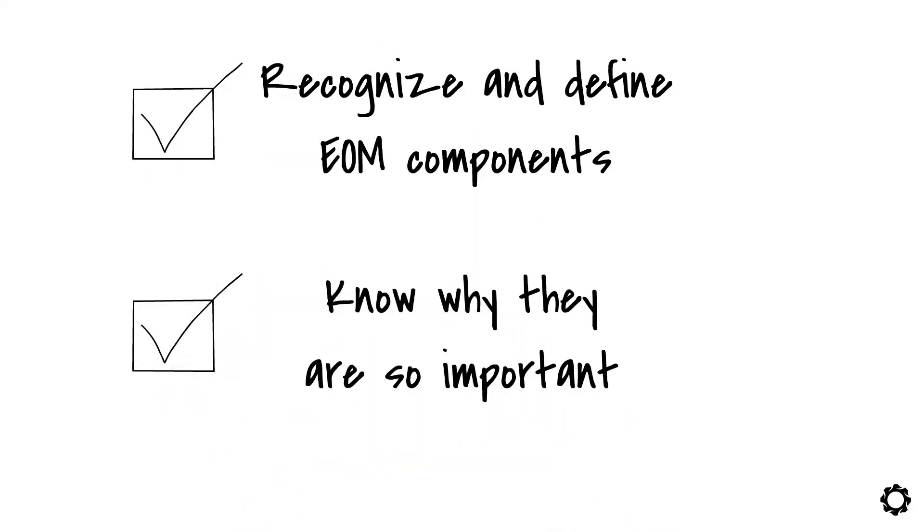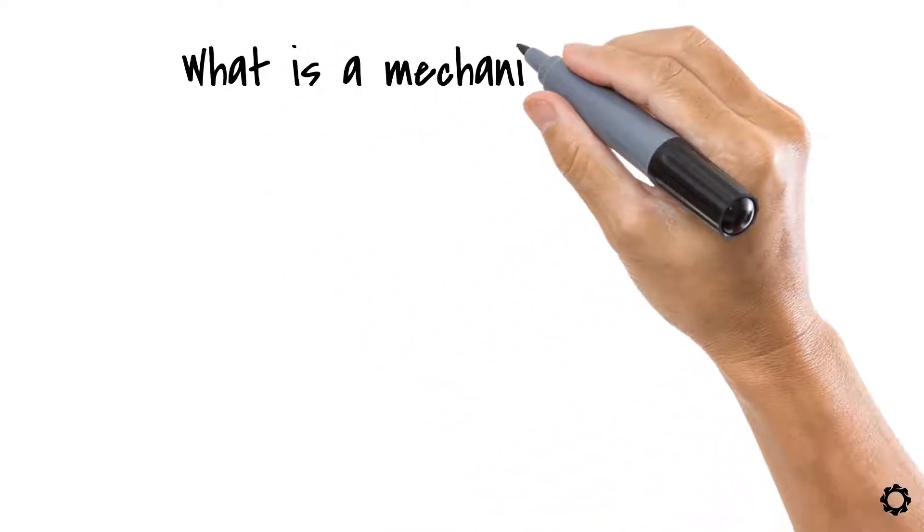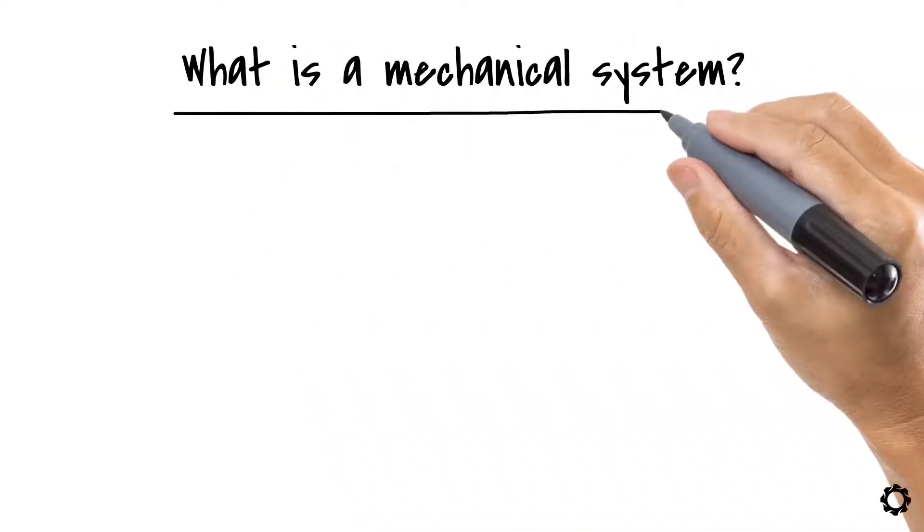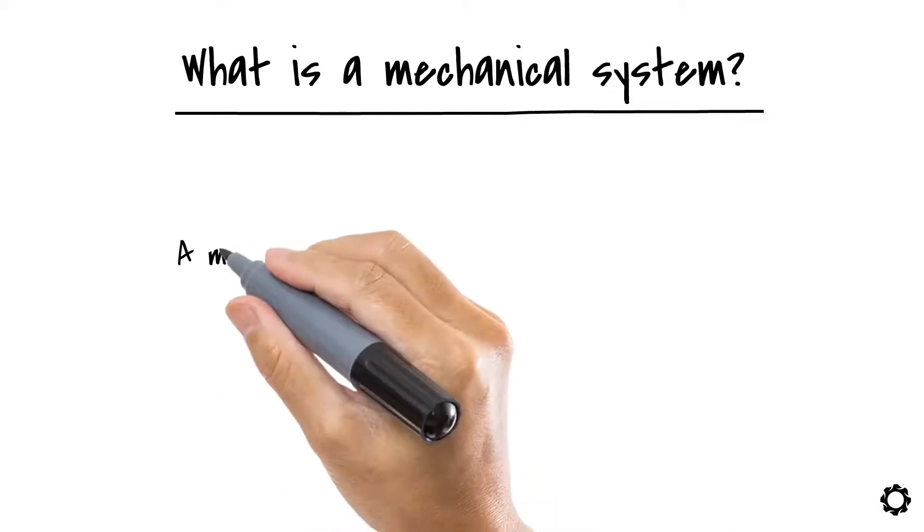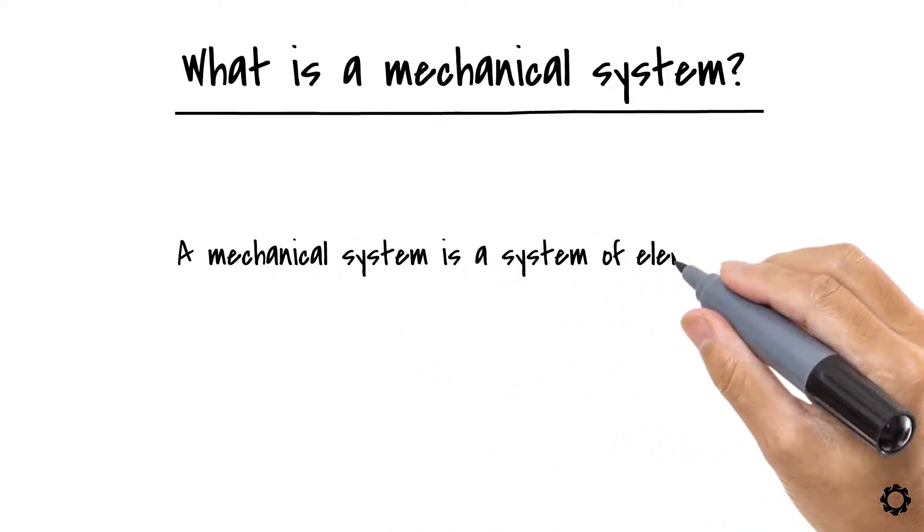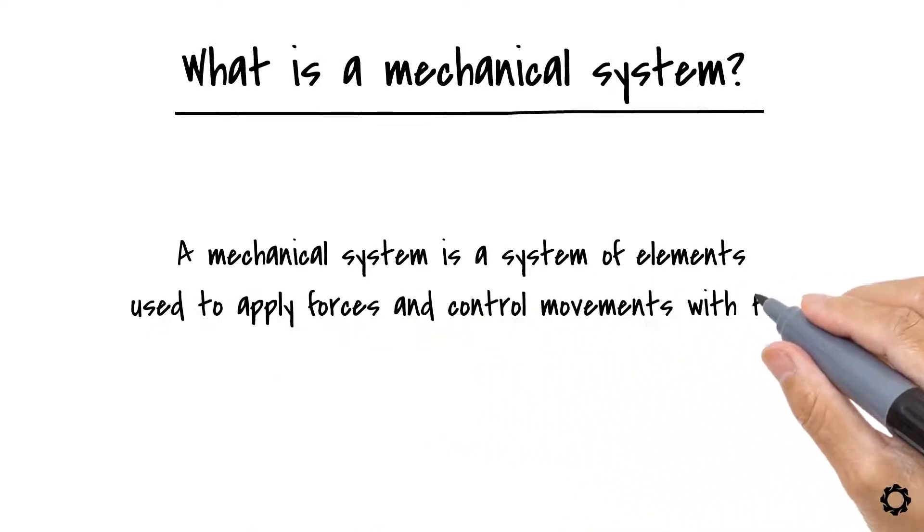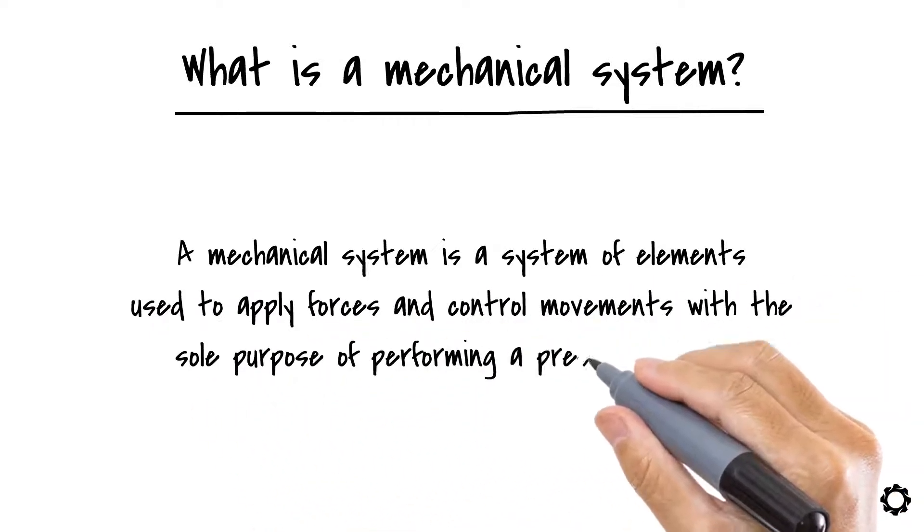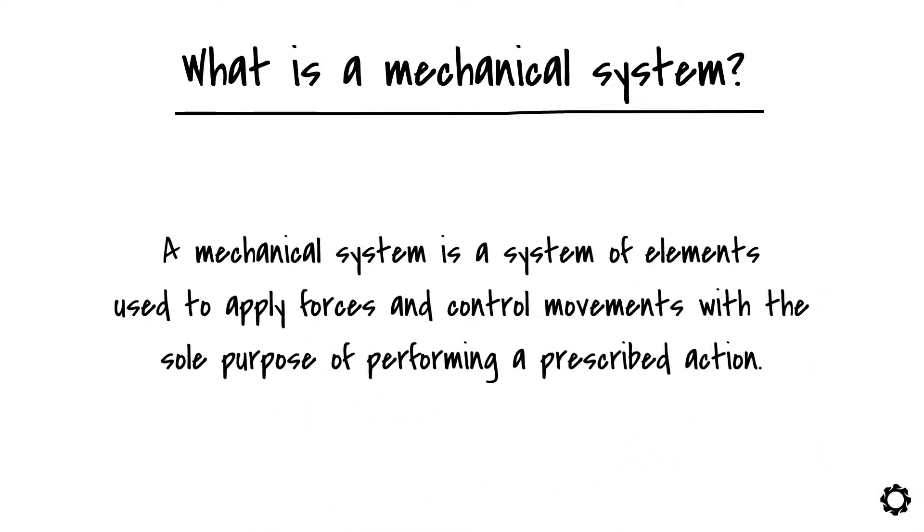To prepare the ground for what's coming next it is necessary to define what is a mechanical system. In simple terms, a mechanical system is a system of elements used to apply forces and control movements with the sole purpose of performing a prescribed action. It's a simple concept.